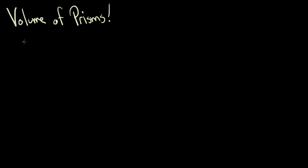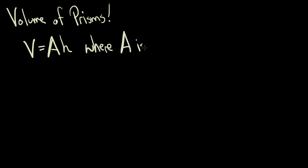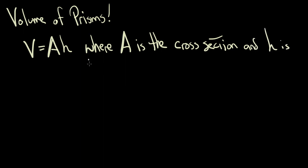Let's talk about volume, because volume is going to be a little bit different for a prism. We can have one formula for all prisms. The volume is equal to A times h, where A is the cross section and h is the height. And this works for any kind of prism.